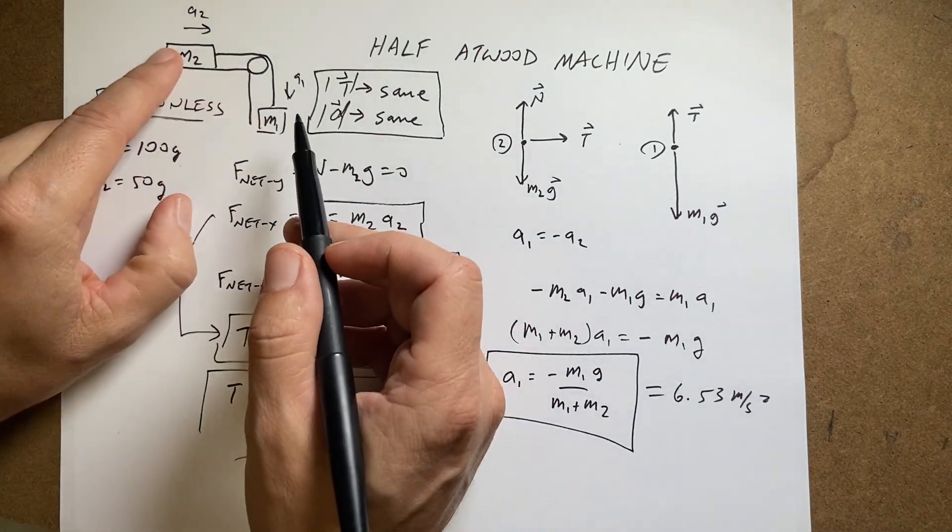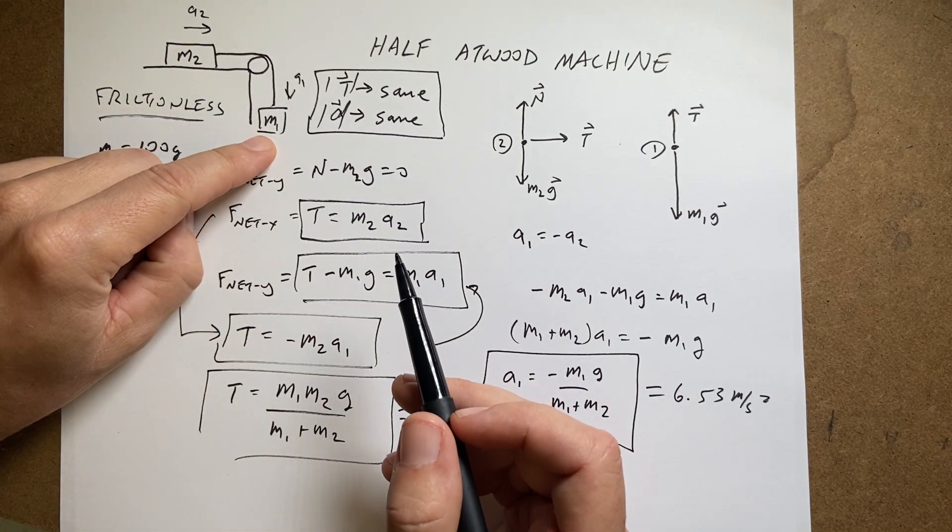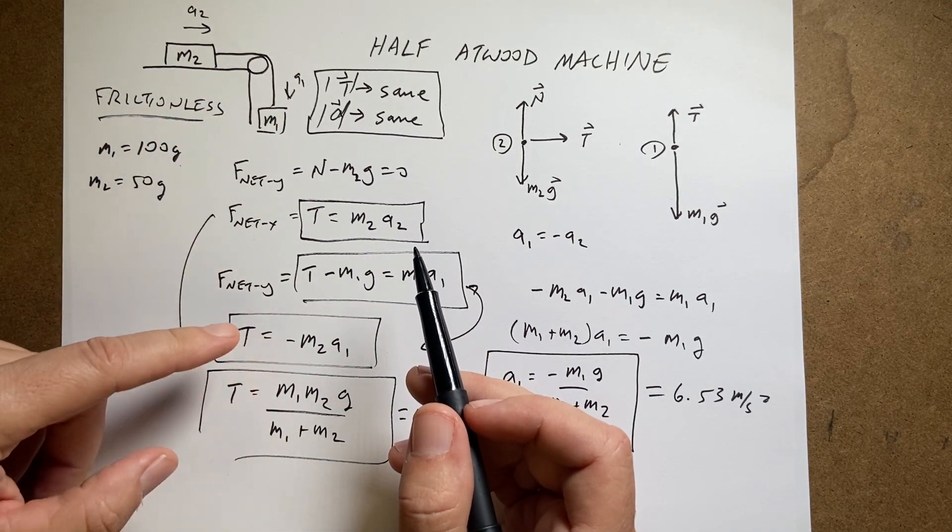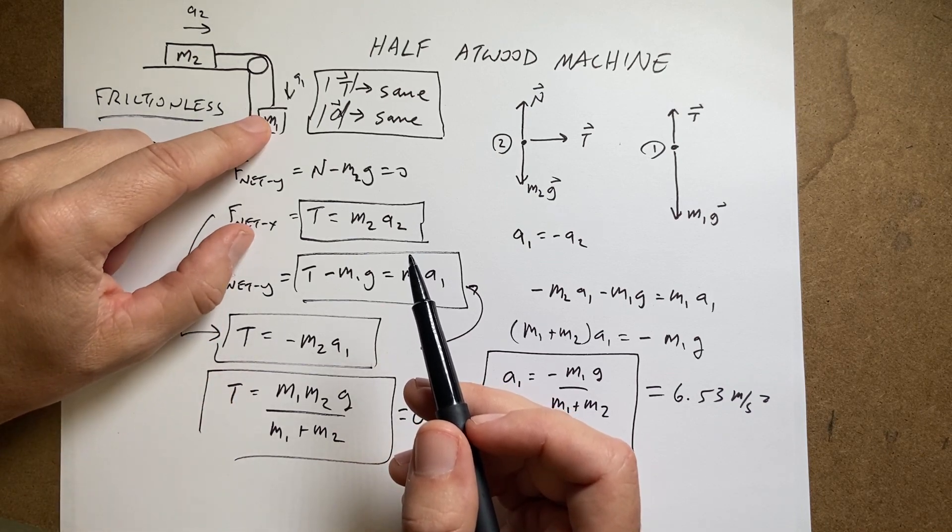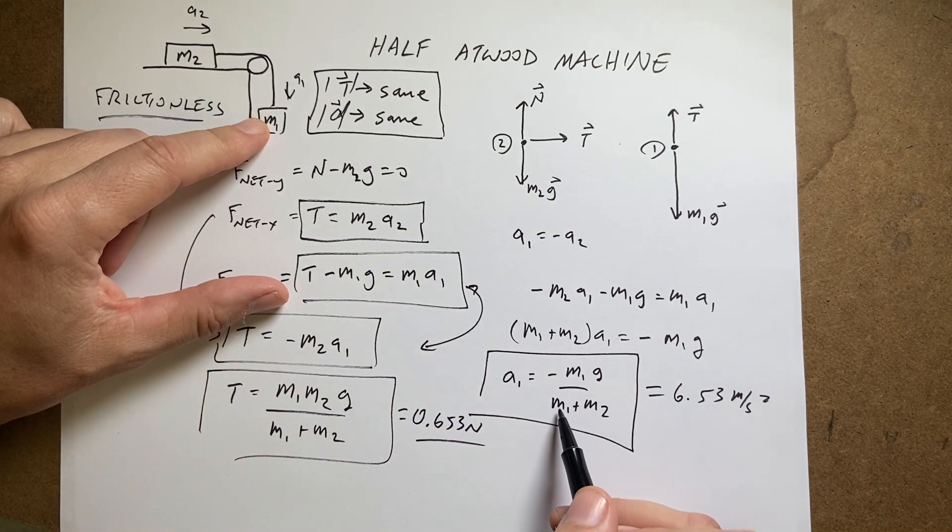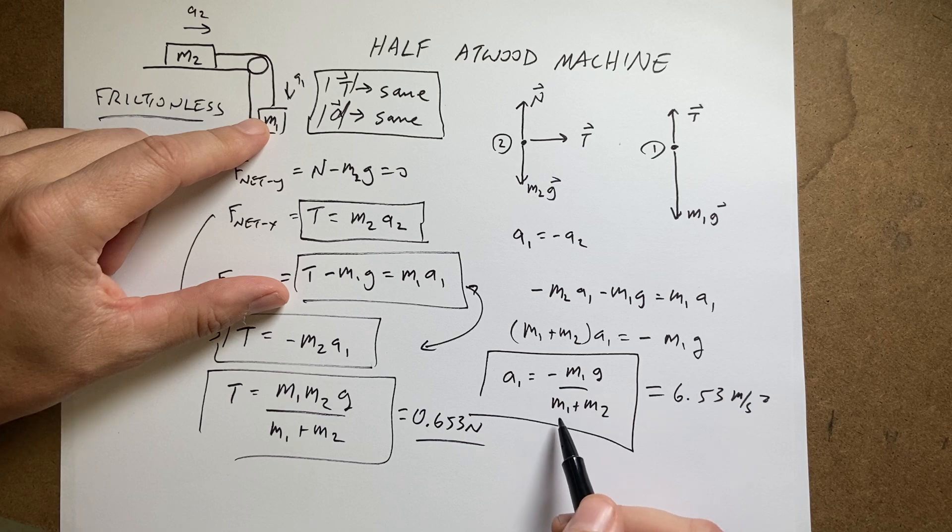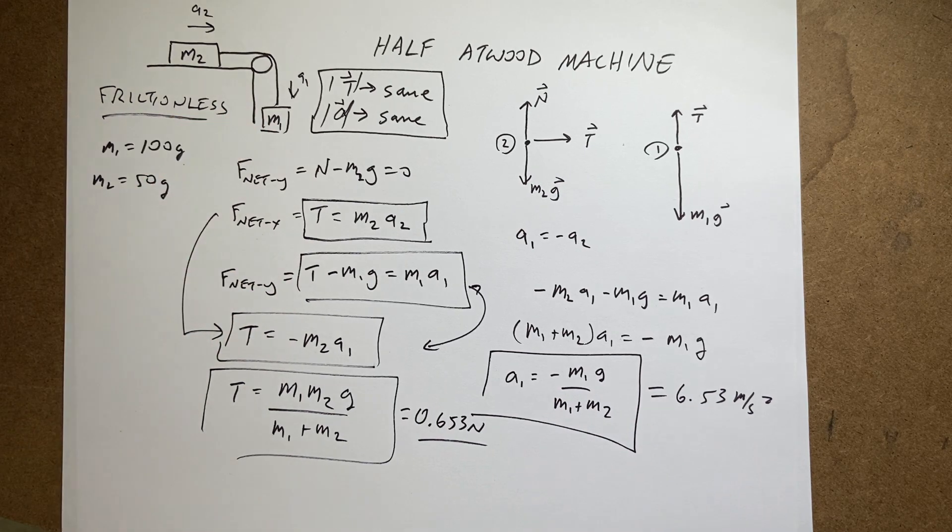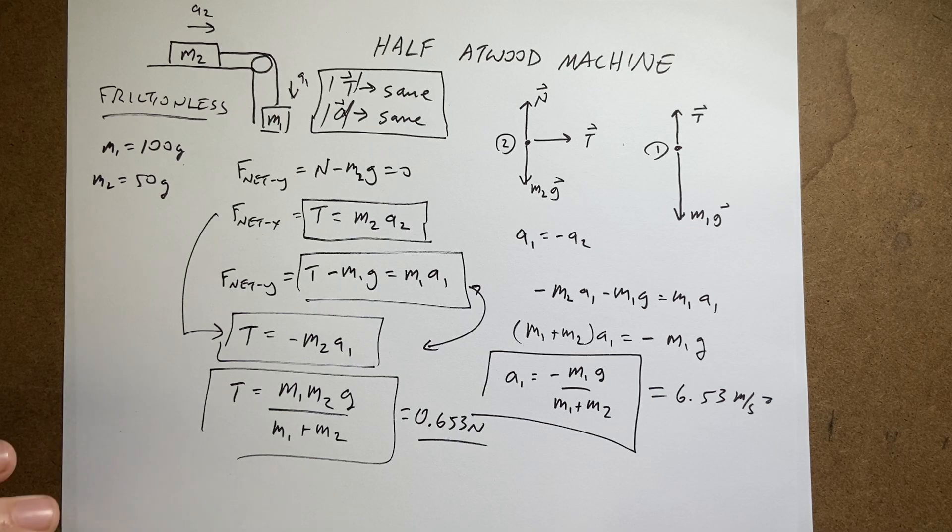What about the other way? What if this mass is super tiny and that mass is super large? Then this should just be falling with an acceleration of negative 9.8 meters per second squared. So if m1 is very large, then this is essentially m1 down here and the m1s cancel and I get an acceleration of negative g. That also checks out.